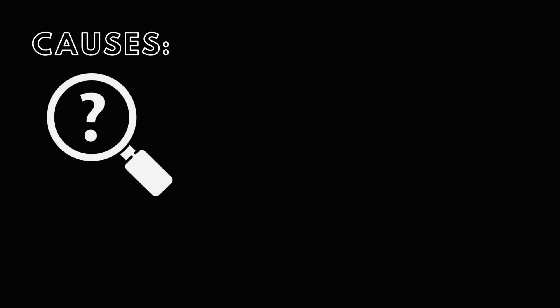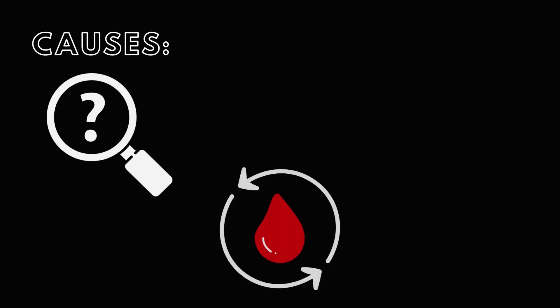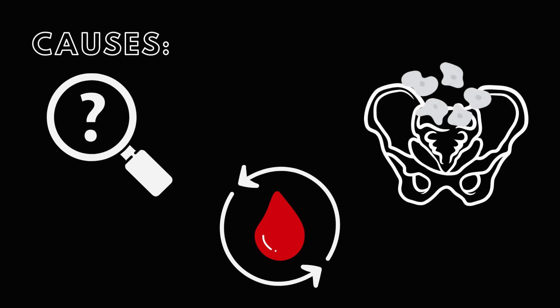Unfortunately, there is no known definitive cause of endometriosis. Some experts believe that retrograde menstruation causes endometriosis. In retrograde menstruation, some or most of the menstrual tissue meant to be sloughed off flows backwards and up into the uterine tubes, with some of the tissue even potentially flowing into the abdominal or pelvic cavity.